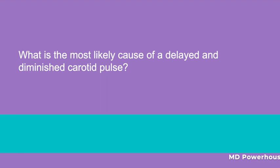Aortic stenosis. Recall that in aortic stenosis you can see a delayed, slow-rising and diminished, weak carotid pulse — this is called pulsus parvus et tardus. In aortic stenosis there can also be a single and soft second heart sound (S2), and a mid-to-late peaking systolic murmur with maximal intensity at the second right intercostal space radiating to the carotids.